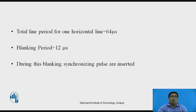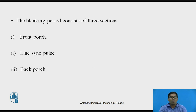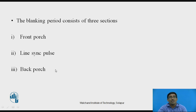The total line period for one horizontal line equals 64 microseconds. The blanking period required is 12 microseconds. During this blanking, synchronization pulses are inserted, and this synchronization is used for both the transmitter and receiver side to get the correct signal at the correct time. The blanking period consists of three sections: first, the front porch; second, the line synchronization pulse; and third, the back porch.